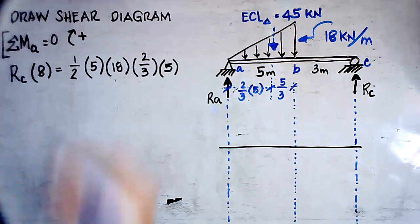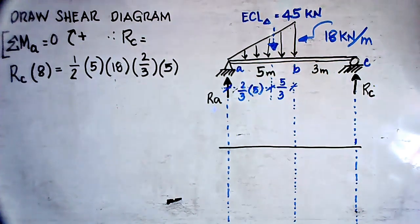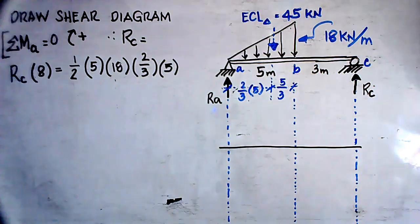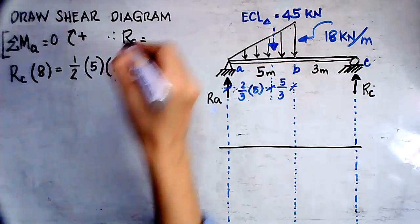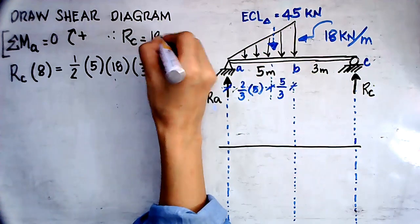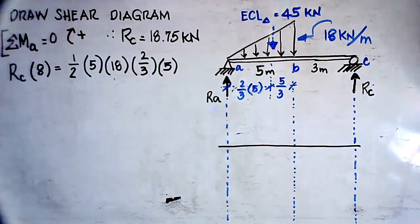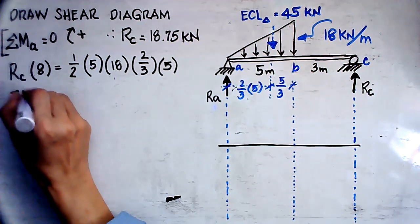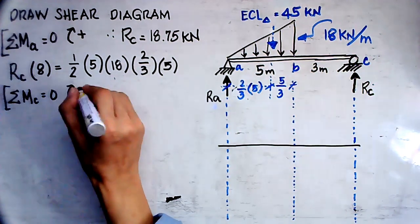Taking moment at A and multiplying the equivalent concentrated load of 45 kilonewtons by the distance of two-thirds times five meters, we can determine the reaction at C. Calculating this, we get a value of 75 over 4, which is 18.75 kilonewtons. So the reaction at C equals 18.75 kilonewtons.